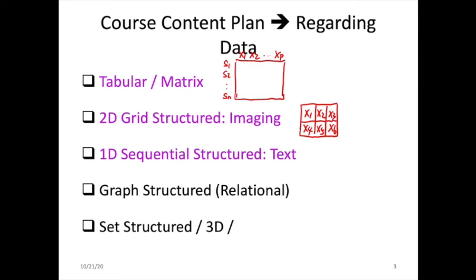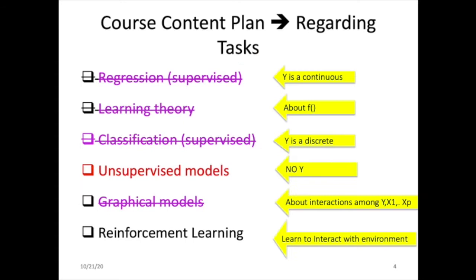So again, because this is the last section, I want to review. In the data variable, we covered tabular data, 2D grid imaging type of data, and 1D sequential text type of data. We don't have time to cover graph structure data and set structure data.